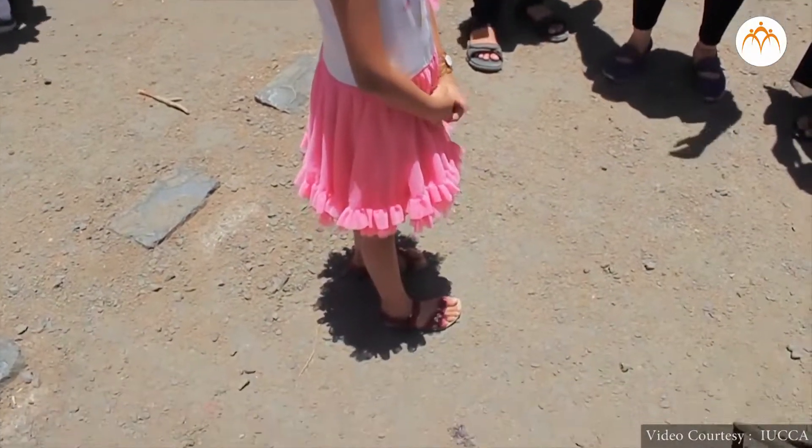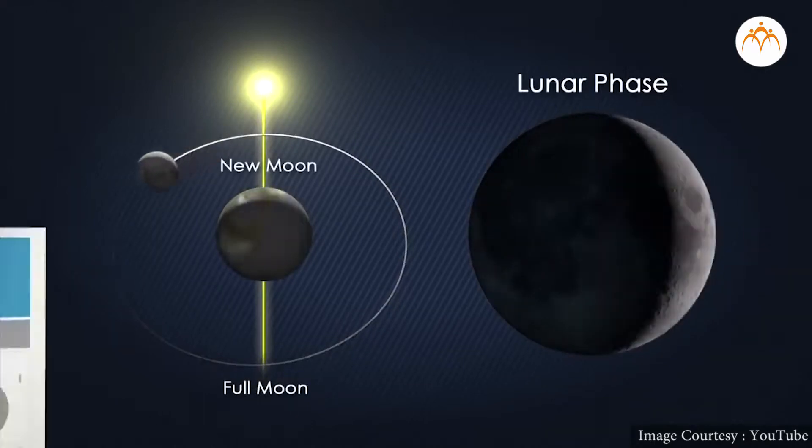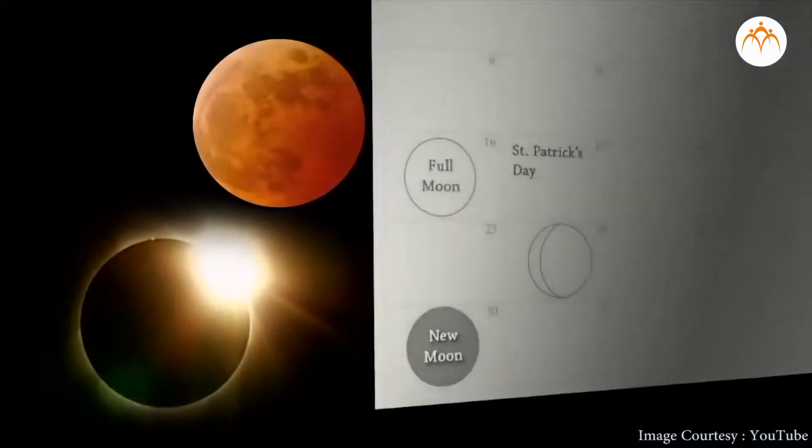Challenge: If the moon orbits the Earth once a month, why doesn't an eclipse happen every month?